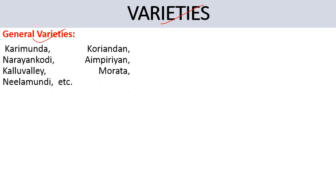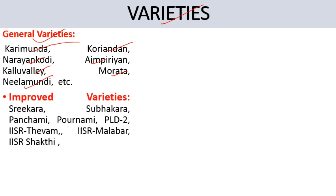Black pepper varieties are divided into two categories. General varieties include Karimunda, Coriandrum, Narayan Kodi, Empirion, Kullu Valley, Morata, and Nilamundi. Improved varieties include Sarikara, Shubhakara, Panchami, Pornami, PLD2, IISR Thivam, IISR Malabar, and IISR Shakti.